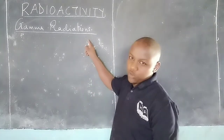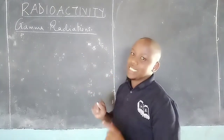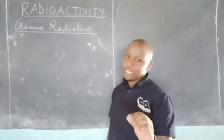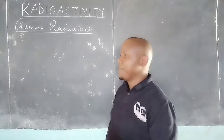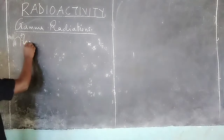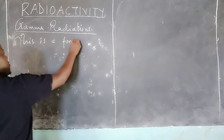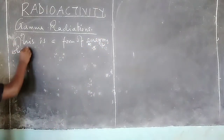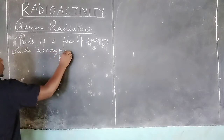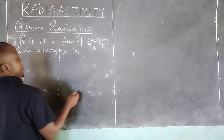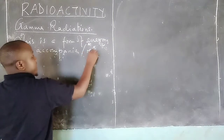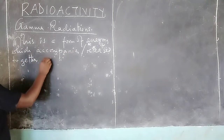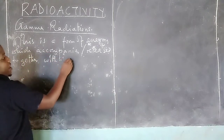Gamma radiations are not particles generally, but just a form of energy which accompanies the release of alpha particles or beta particles. We can think of these as a form of energy which is released together with alpha particles.